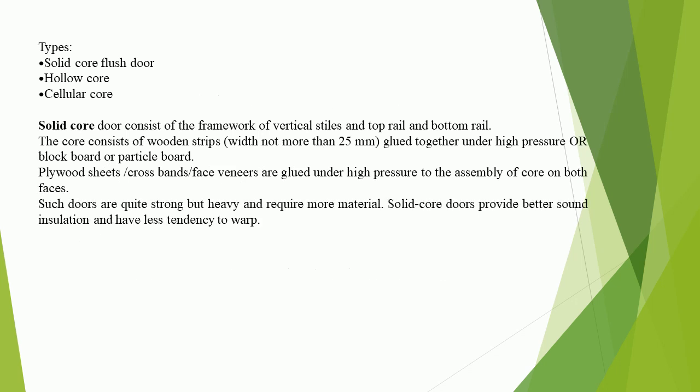Types of flush doors include solid core and hollow core. In the solid core door, the core consists of a framework of vertical stiles, top rail, and bottom rail. The core consists of wooden strips not more than 25 mm wide, glued together under high pressure, or block board or particle board. Plywood sheets, cross bands, and face veneers are glued under high pressure to the assembly of core on both faces. Such doors are quite strong but heavy and require more material. Solid core doors provide better sound insulation and have less tendency to warp.